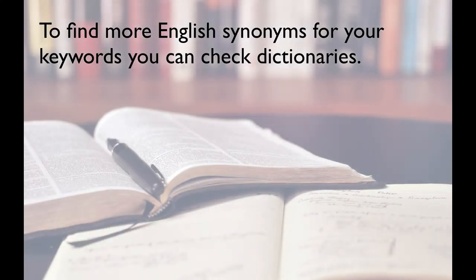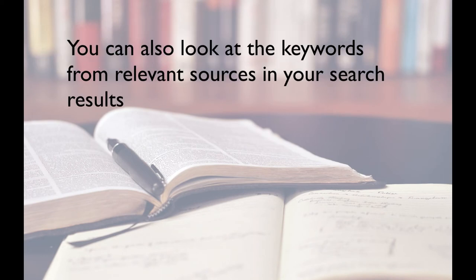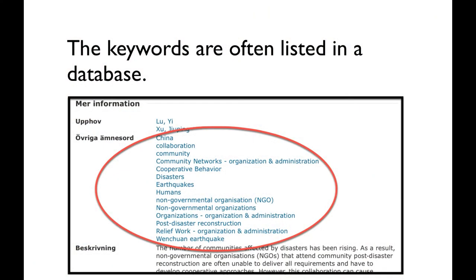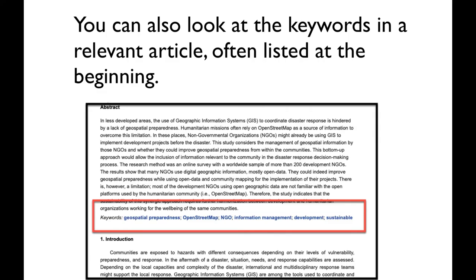To find more English synonyms for your keywords, you can check dictionaries. You can also look at the keywords from relevant sources in the search results, as they are often listed in a database. And you can also look at the keywords in a relevant article, often listed at the beginning of the article.